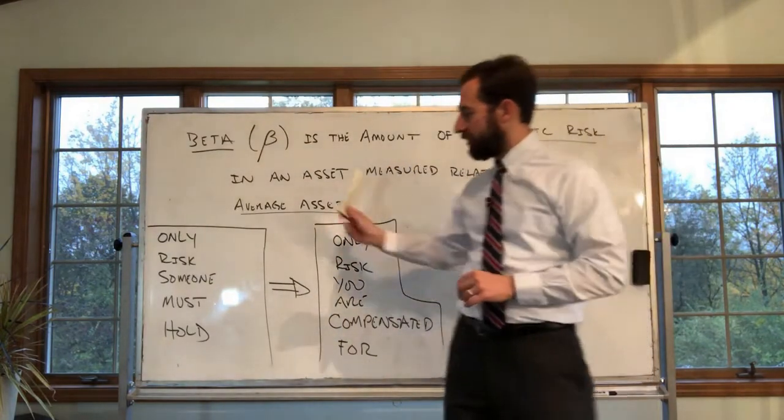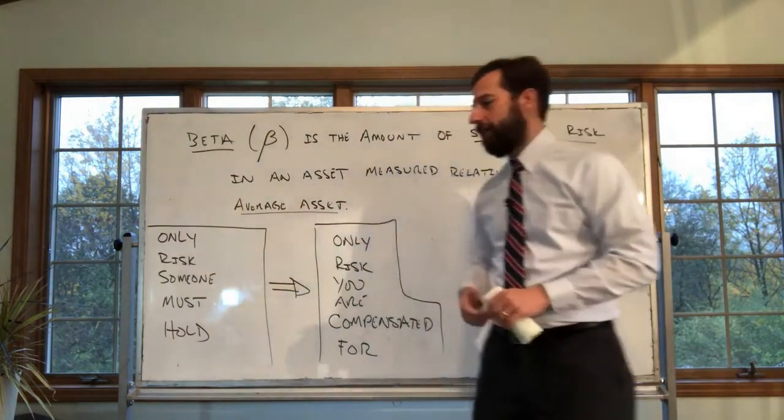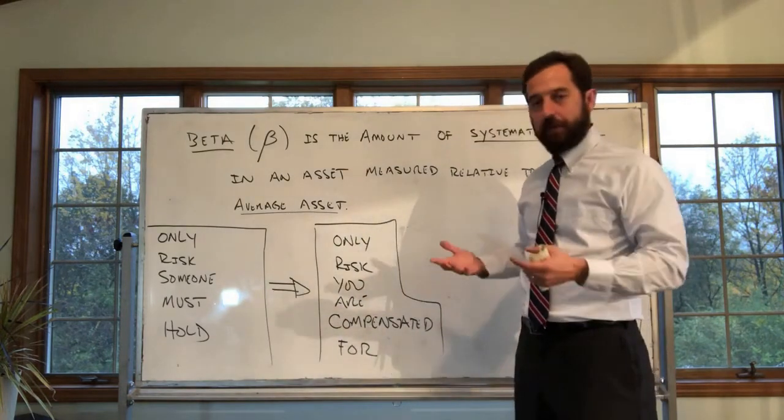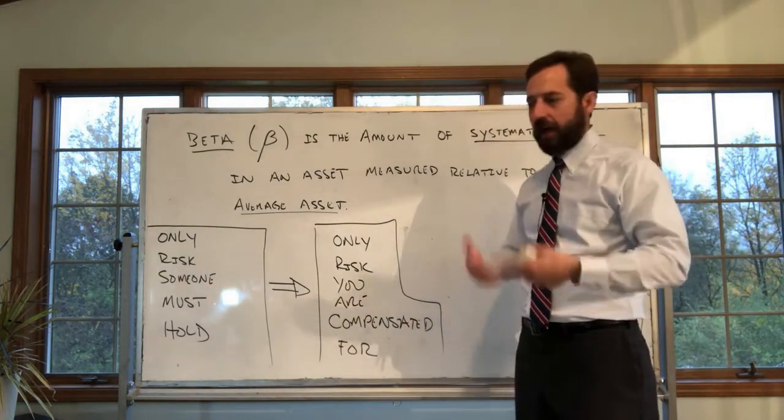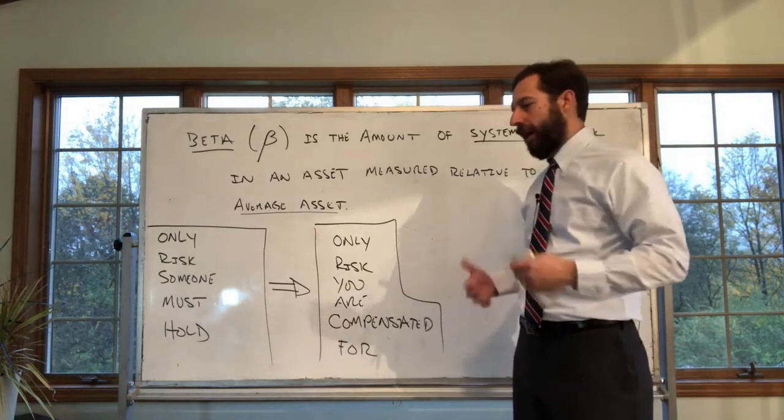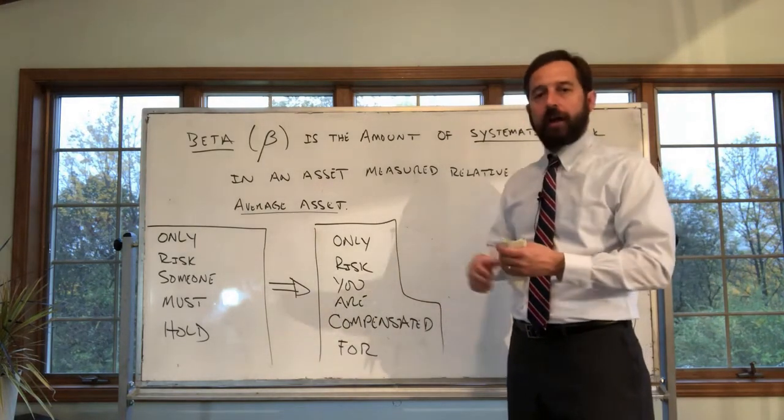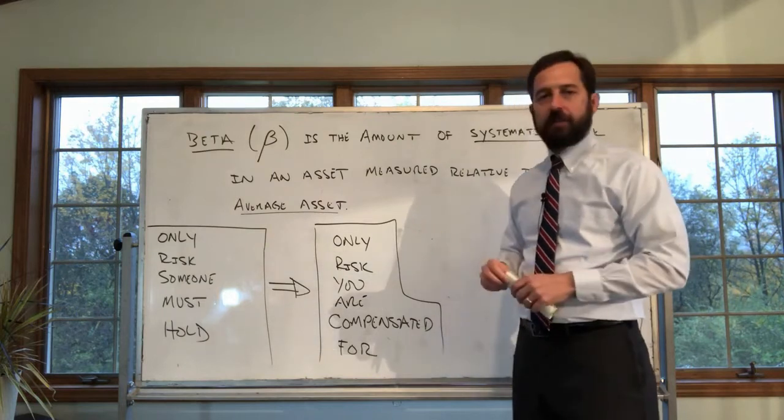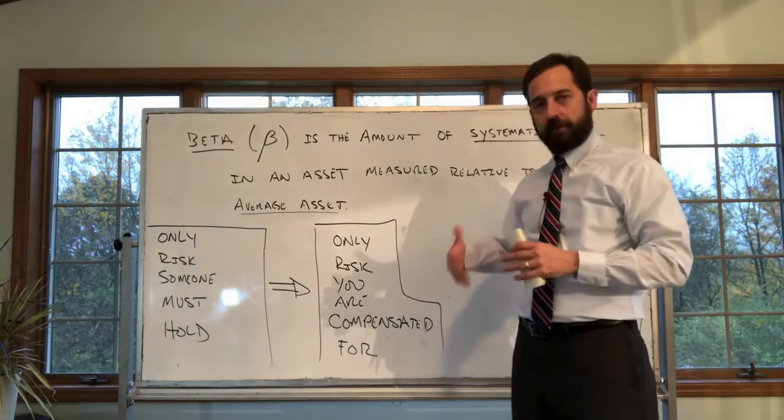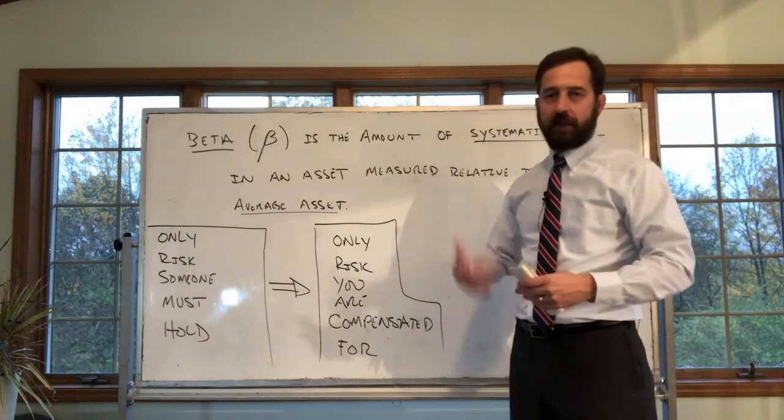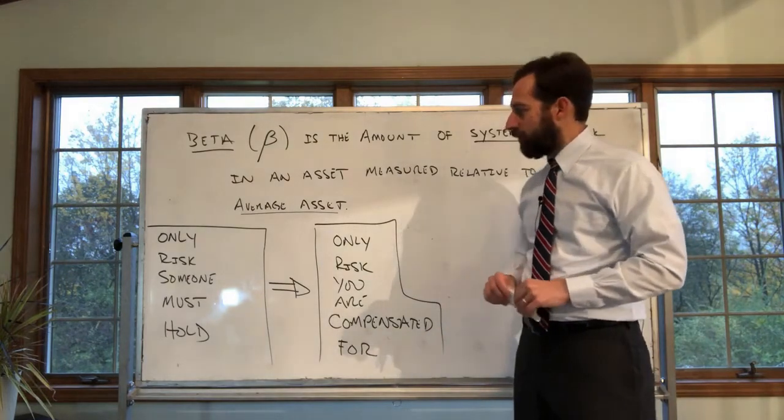One thing to keep in mind is this systemic risk must be taken. The idea is we need people to buy stocks and bonds and so forth. By doing so, you are supplying capital to businesses which they're going to turn around and build factories and employ people and contribute to economic growth.